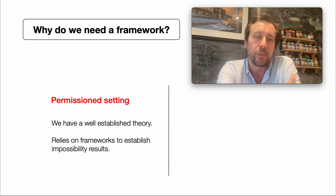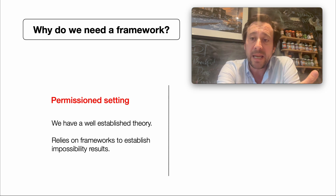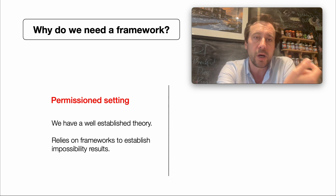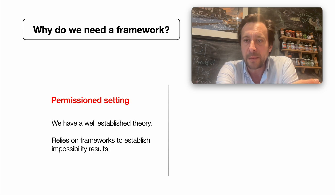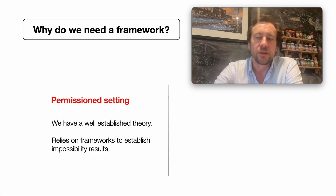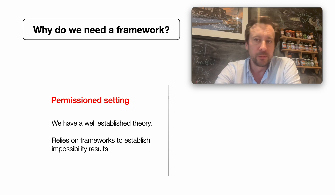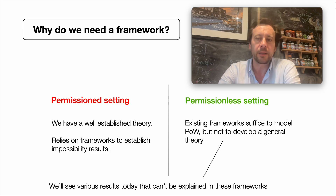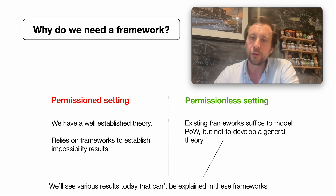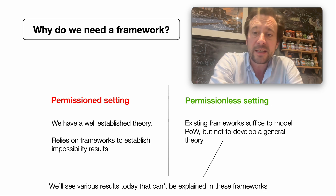The FLP theorem plays a role on a day-to-day basis as we go about designing protocols, because if we're defining a protocol and we want it to work in asynchrony, then we know randomness is required. That's one example; you can give many more. Certainly in the permissioned setting, impossibility results have played a crucial role. How about for the permissionless setting?